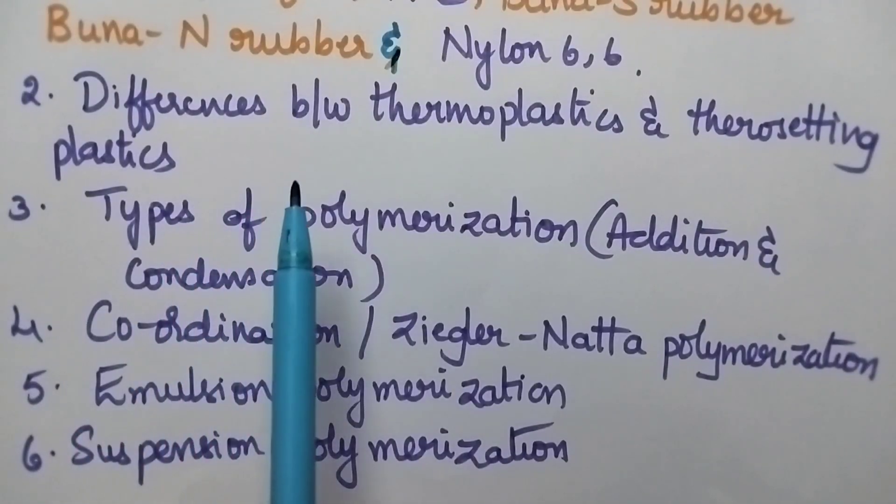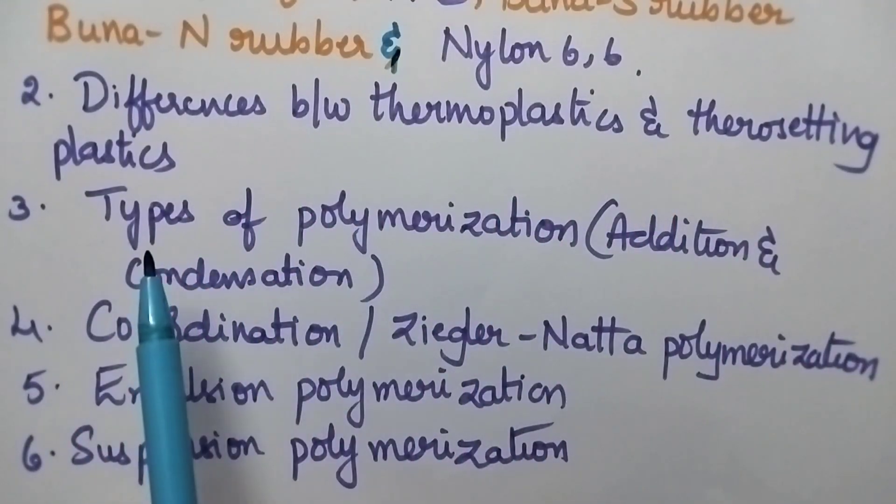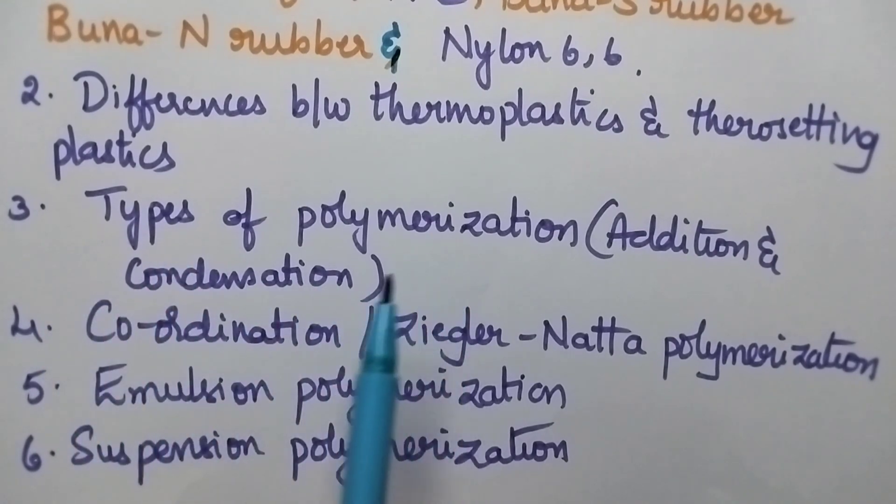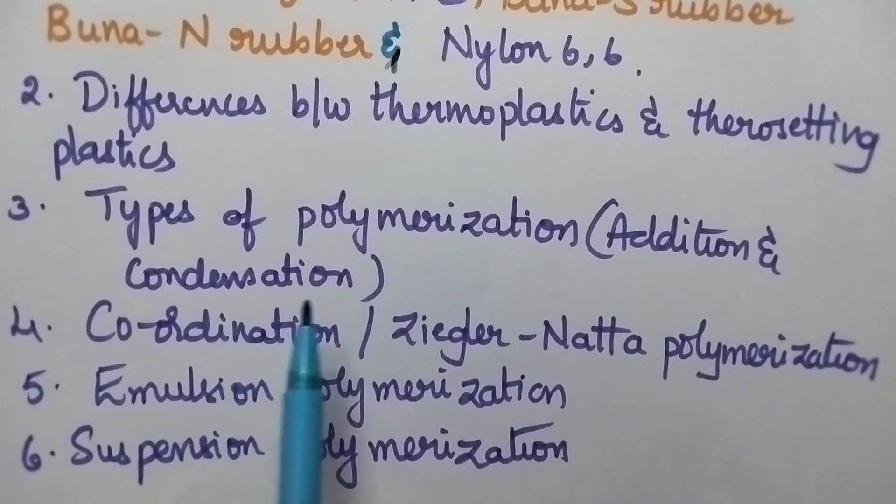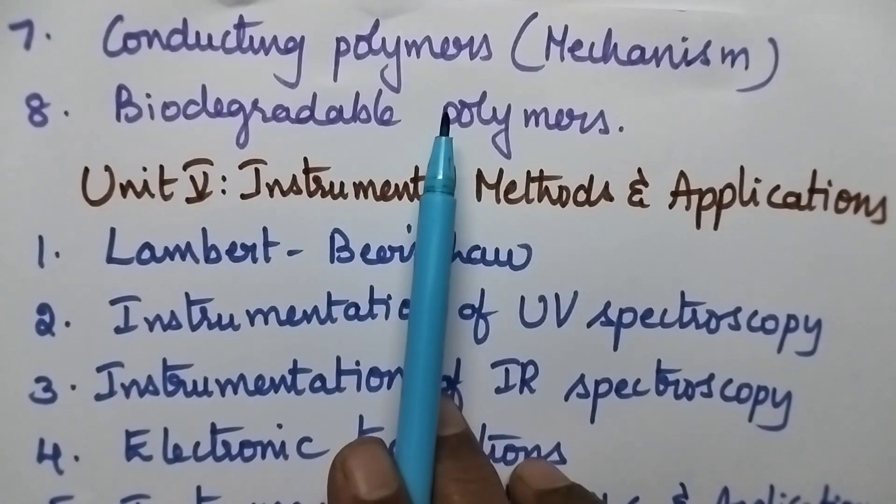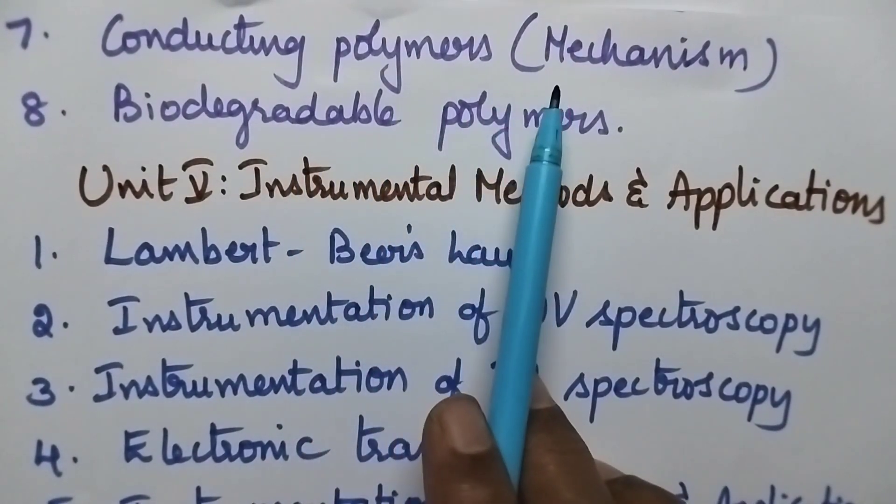Second question, differences between thermoplastics and thermosetting plastics. Third question, types of polymerization. In particular, addition and condensation polymerization. Fourth question is coordination or Ziegler-Natta polymerization. Fifth question is emulsion polymerization. Sixth question is suspension polymerization. Seventh question is conducting polymers, especially the mechanism of conduction. And eighth question is biodegradable polymers.